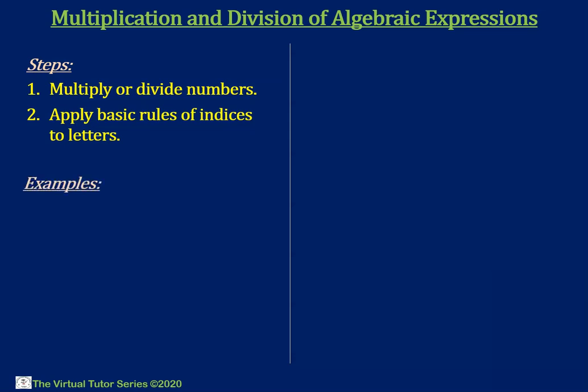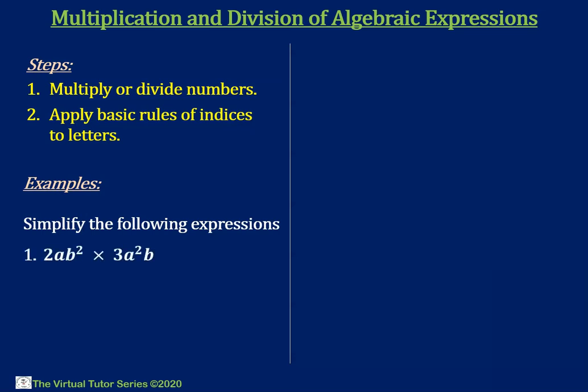For practical understanding, let's consider the following examples. Simplify the following expressions: Number 1: 2ab squared times 3a squared b. Number 2: 35x to the power 5 times y divided by 7xy squared. And Number 3: 6p cubed times p squared divided by 3p to the power 4.